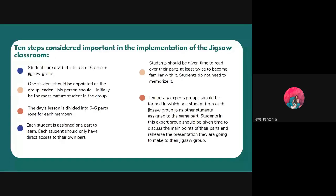Students will be expected to teach their part to the rest of the group. Each student should be given time to read over their part at least twice to become familiar with it. Students do not need to memorize it. At this point, students don't really interact with other members of the group — they just read and study their own part independently.